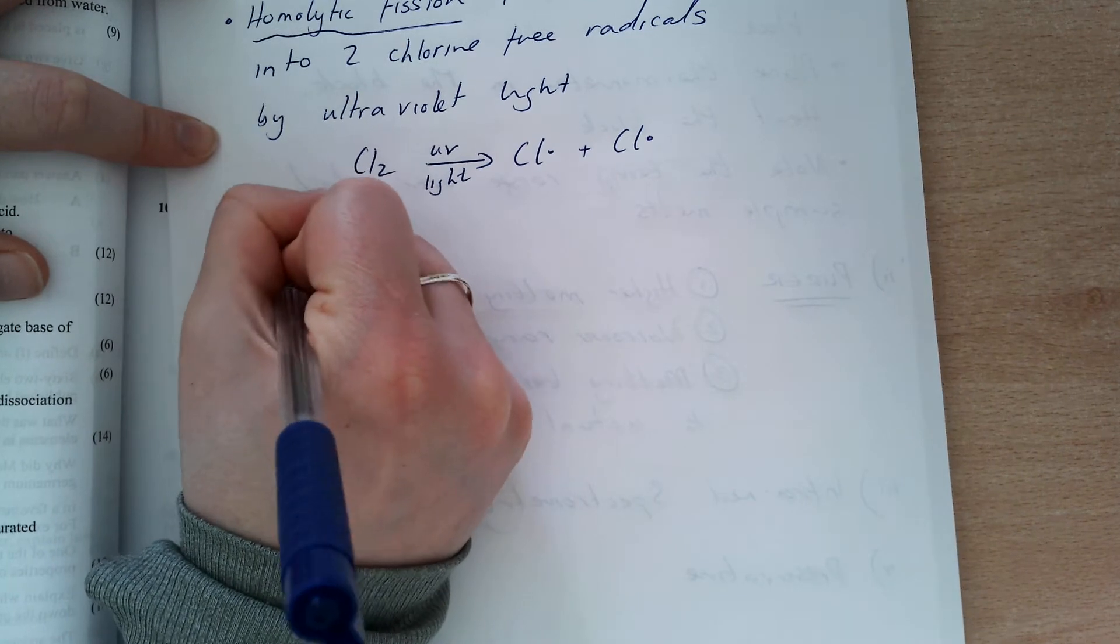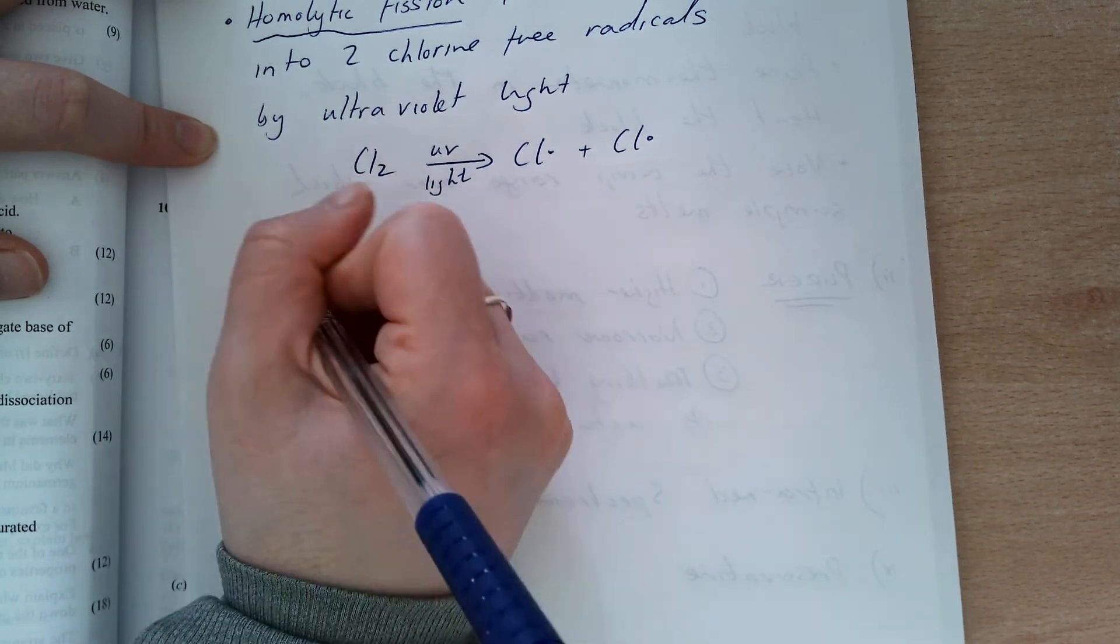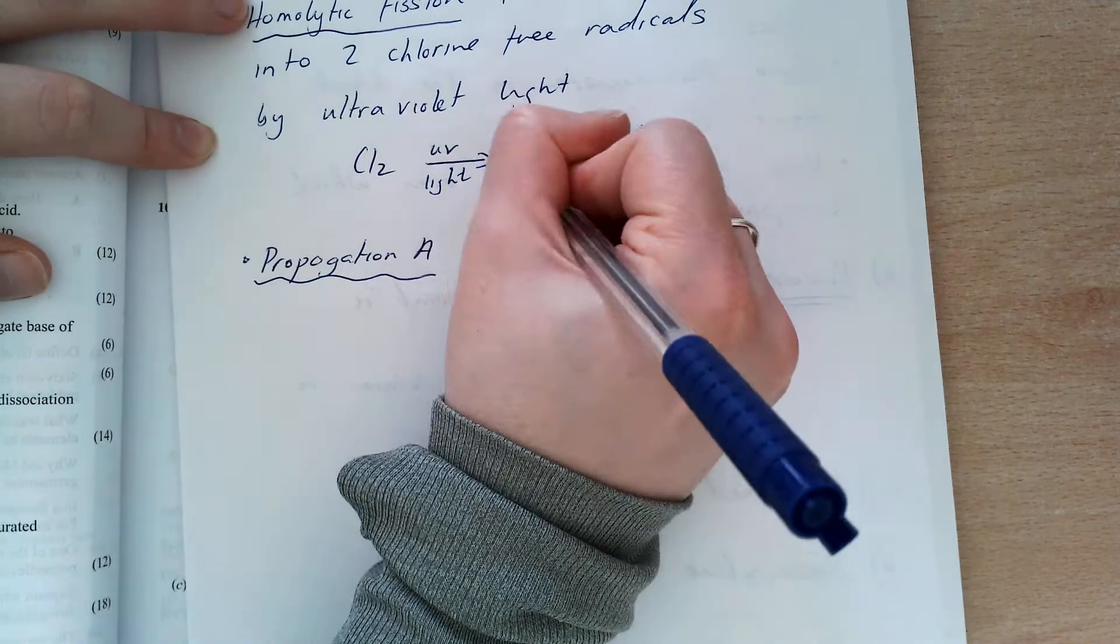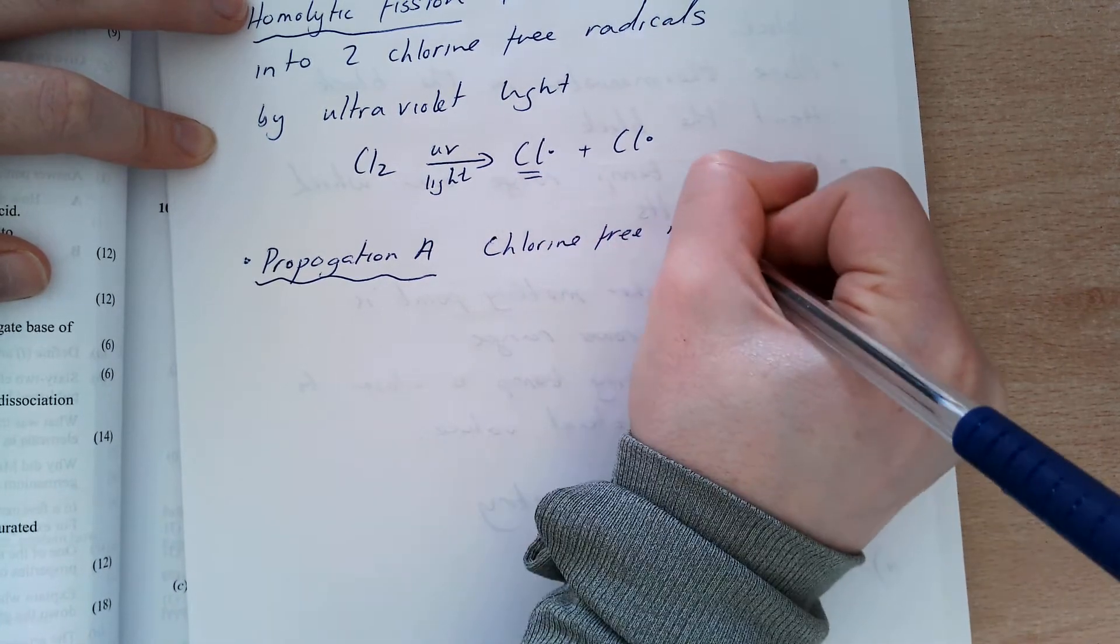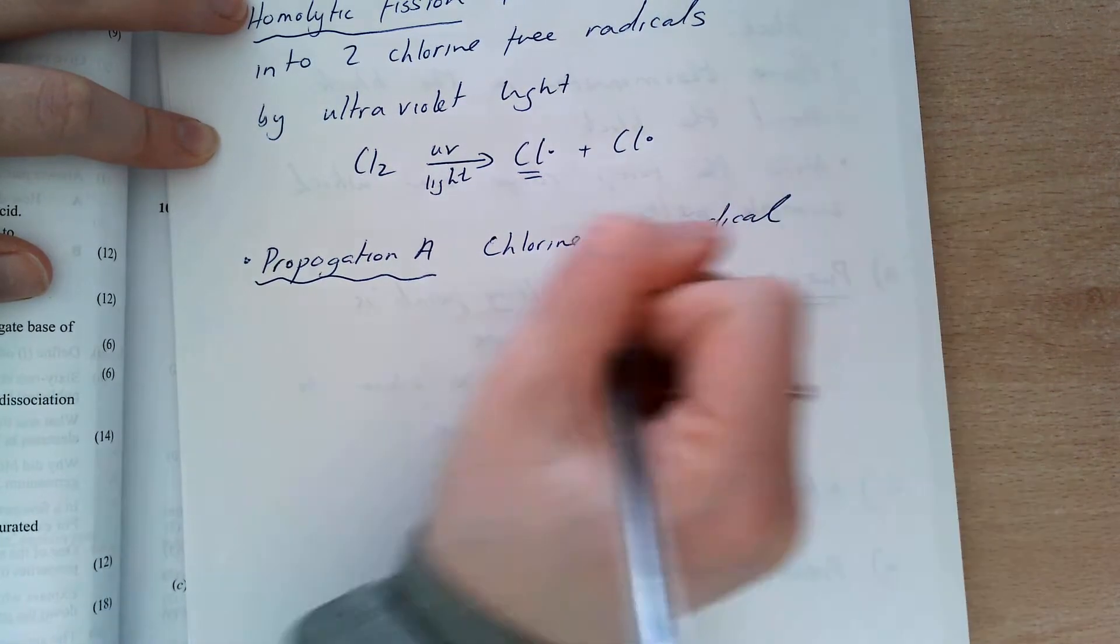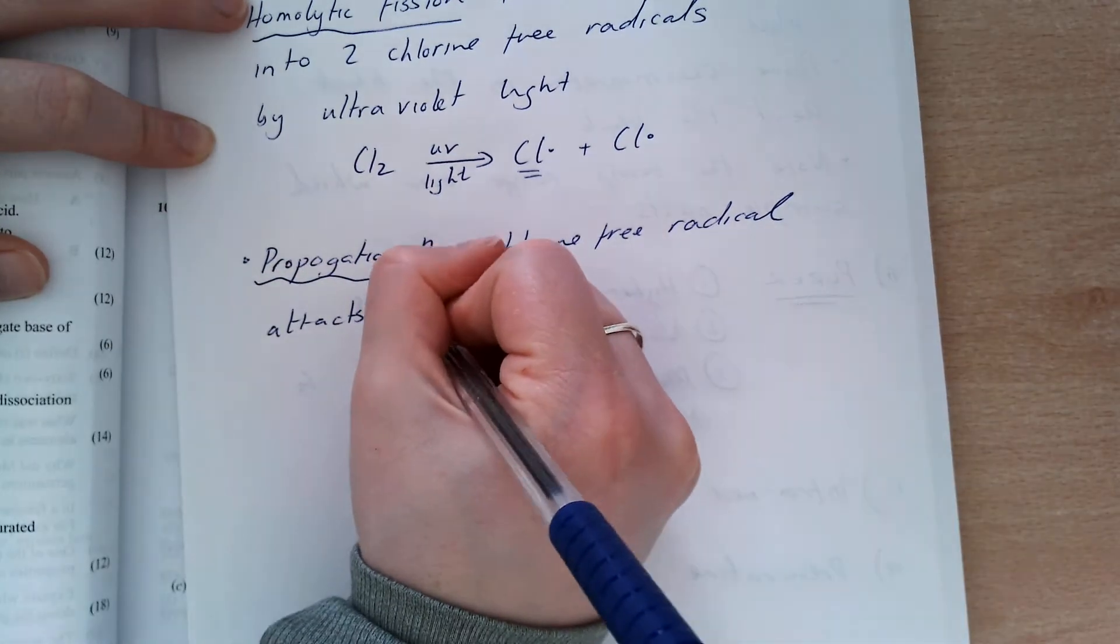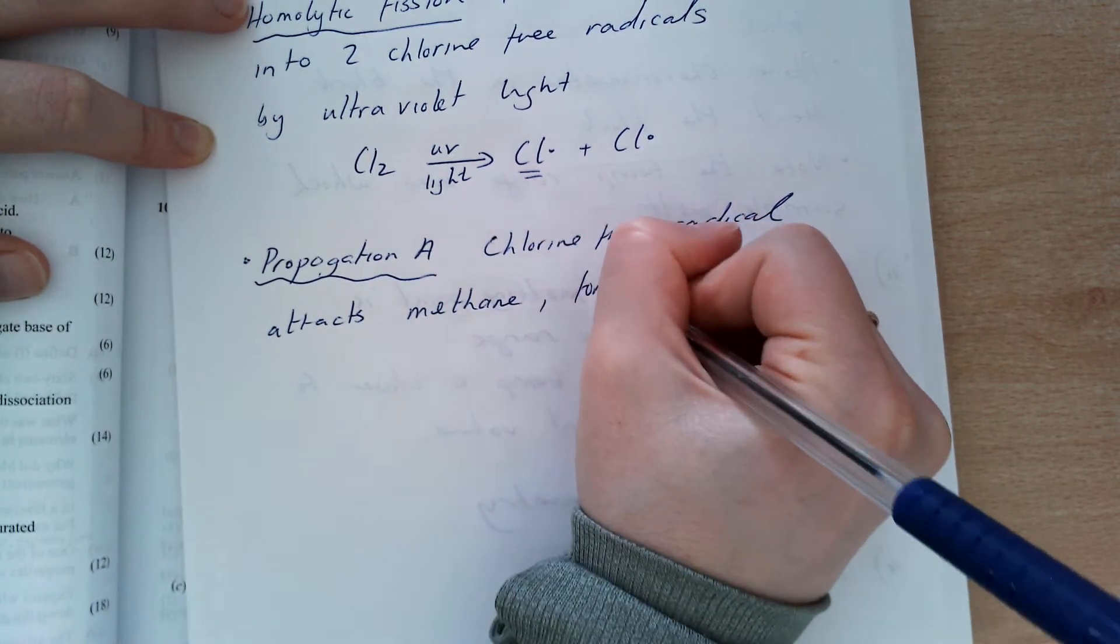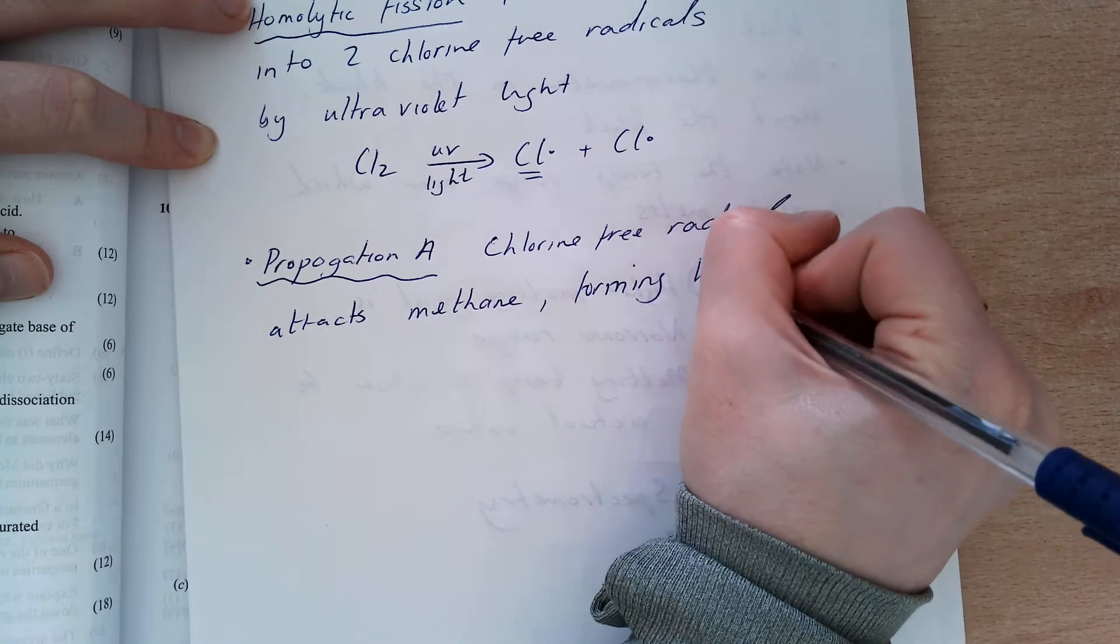So that's the first. The second one, then, is propagation A. So this chlorine-free radical attacks methane. And when it does that, it forms hydrogen chloride.